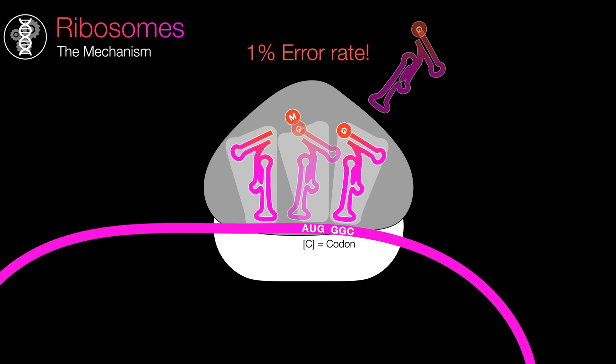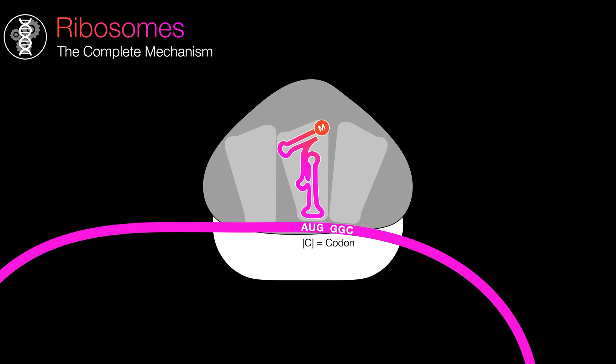This simplified model has a high error rate of 1 in 100, which is significant when considering the length of most proteins to be around 200 to 1000s. Real ribosomes have an error rate of 0.01%, or 1 in 10,000, which begs the question, what do real ribosomes do differently than this simplified model?